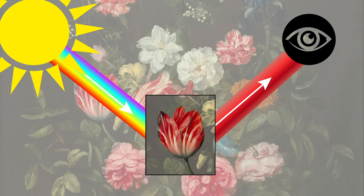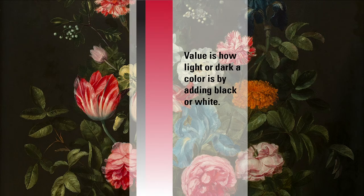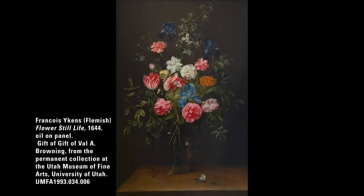Color is defined as light reflected off of objects. We see color when light waves bounce from an object back to our eyes. There are three main characteristics of color: hue, the name of a color; value, how light or dark a color is by adding black or white; and intensity, how bright or dull the color is. We will be examining these principles as we ask ourselves questions and analyze the work of art. Afterwards we'll have the opportunity to do an art activity about color.